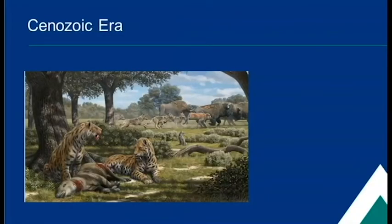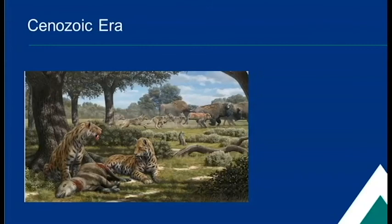Now we can talk about the Cenozoic era — the age of mammals. It has three periods: the Paleogene period, which includes the Paleocene, Eocene, and Oligocene epochs; the Neogene period, which includes the Miocene and Pliocene epochs; and finally, the Quaternary period, which includes the Pleistocene and the Holocene epochs. For this presentation, we will focus on the Quaternary, since that is the age of humans. During the Cenozoic, some forests changed into grasslands, and mammals and birds adapted. For example, the saber-toothed tiger developed large specialized teeth to hunt its prey. By this time, Alberta began to look more like it does today, with forests containing coniferous trees, rivers, lakes, marshes, and swamps.